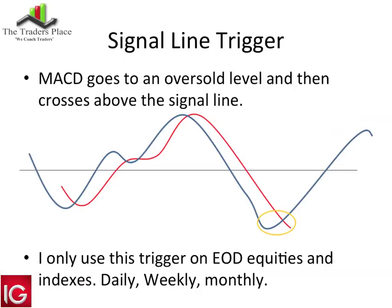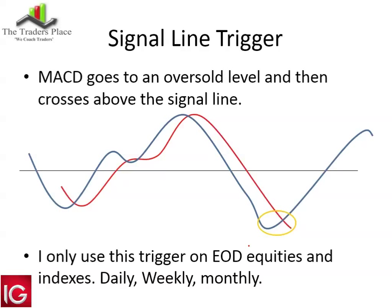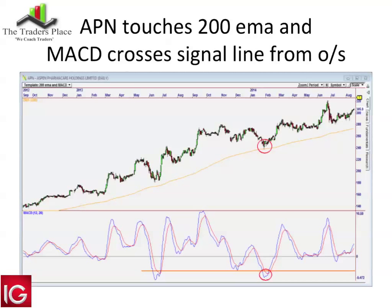The first section: the signal line trigger. The MACD goes oversold — the right-hand trough should be much lower than the left-hand trough. I want the MACD to be oversold relative to its history. I only use this trigger on end-of-day equities and indices on daily, weekly, and monthly charts. I don't use this on forex or intraday. Aspen gives us a really good example.